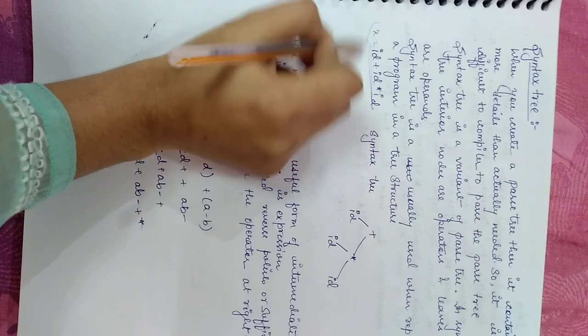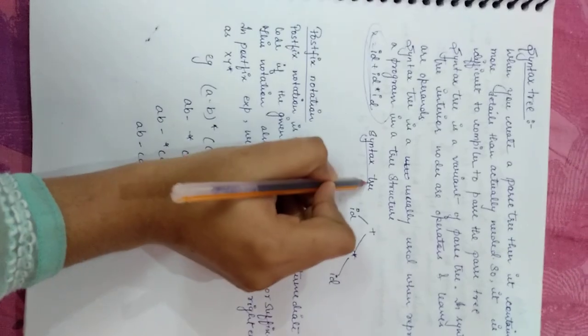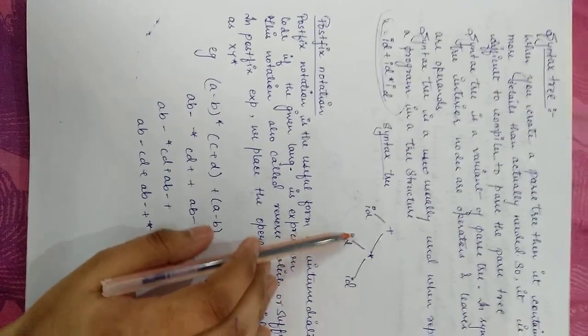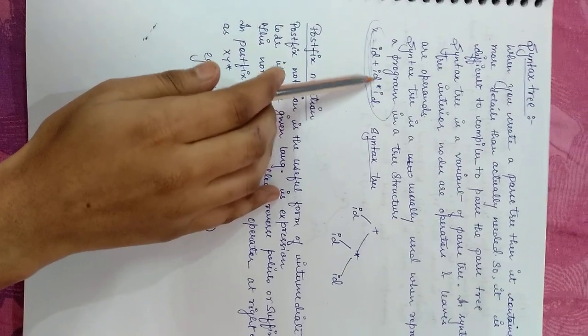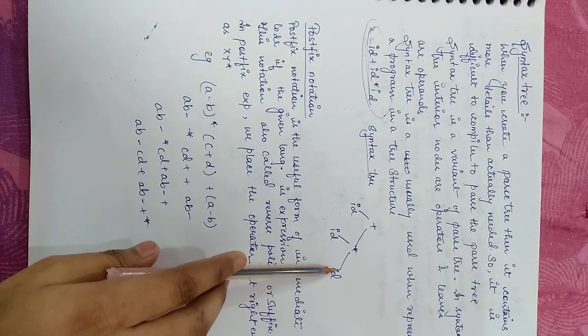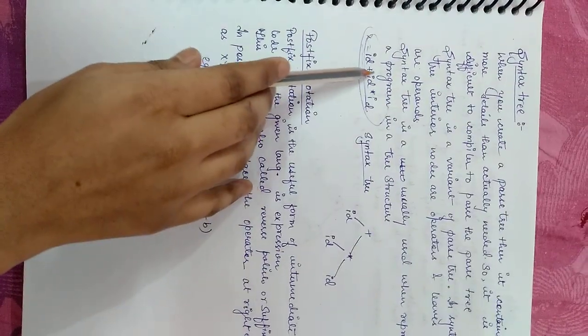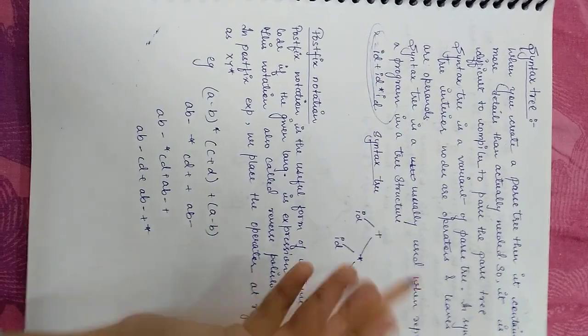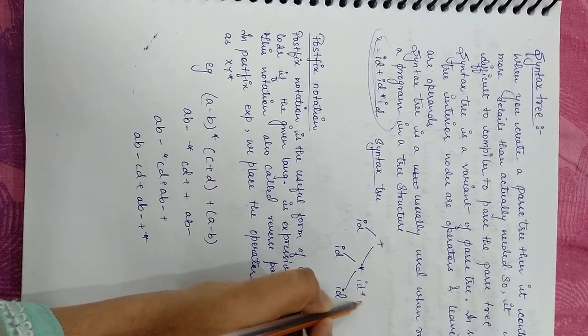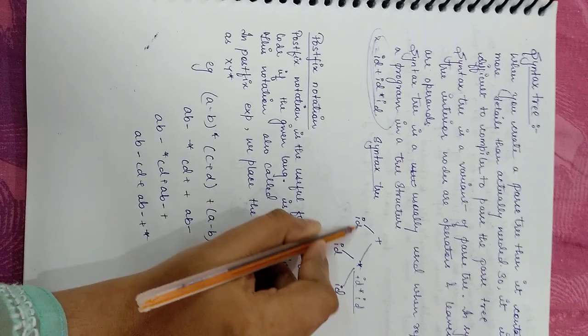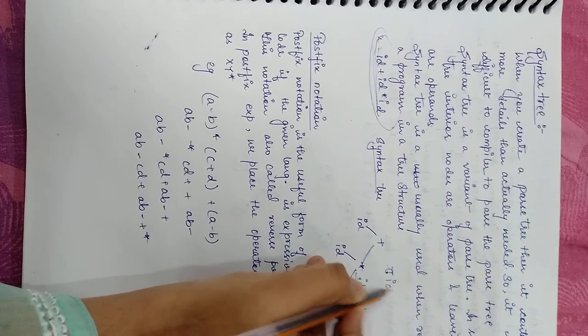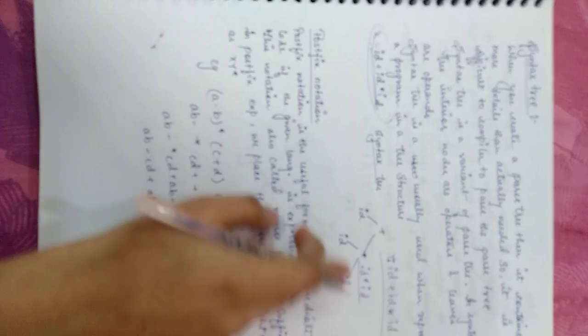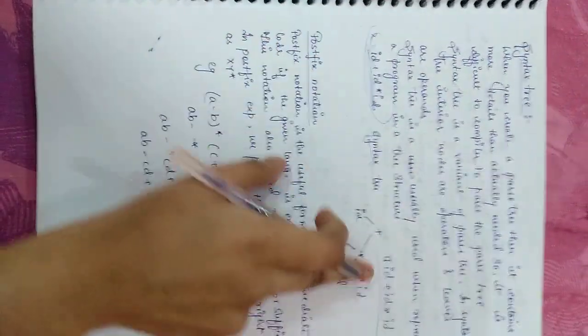If we represent it in a form of syntax tree, first we start from the bottom. The highest priority is the multiplication, then the result will be added to the ID. So what is the result of the ID into ID? Now we need to add this ID into ID, so what is the ID plus ID into ID? So in this way we get this expression, so this syntax tree is correct.